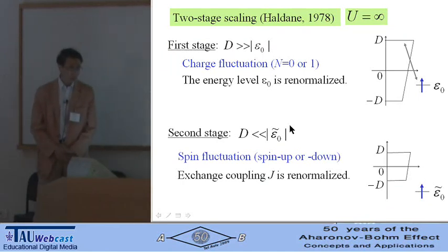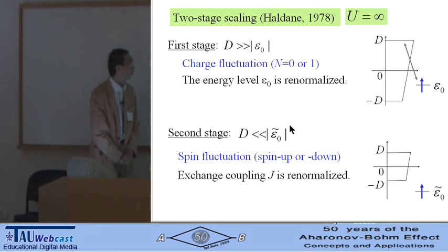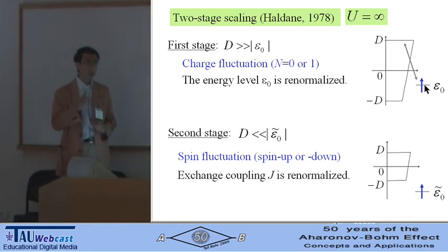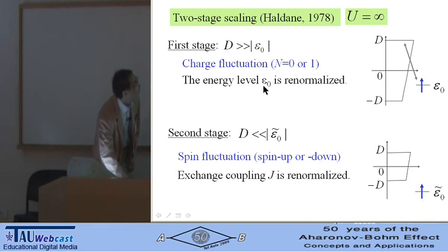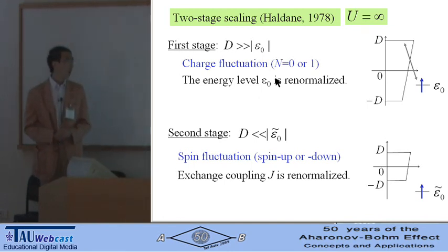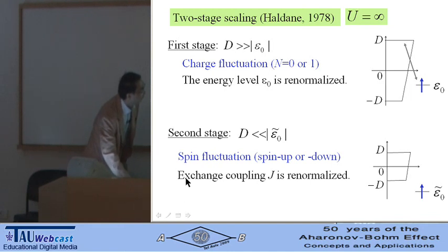Technically, we adopt Haldane's two-stage scaling, assuming infinite U. On the first stage, charge fluctuation, so the number of electrons in the quantum dot is unity or zero, and energy level in the quantum dot ε₀ is renormalized. On the second stage, after the charge fluctuation is quenched, spin fluctuation is taken into account, and exchange coupling J is renormalized.